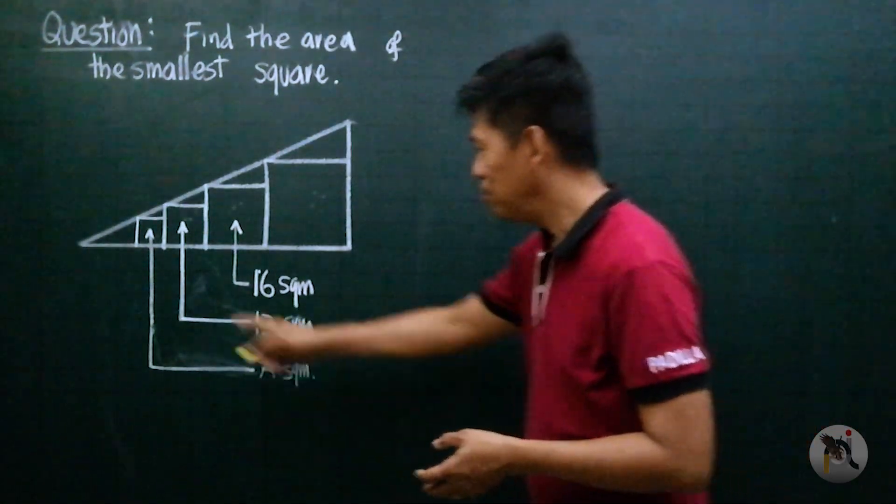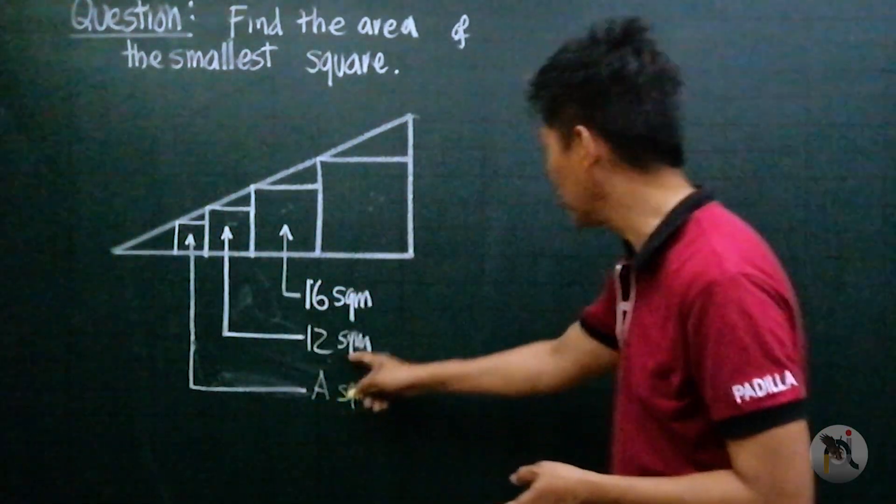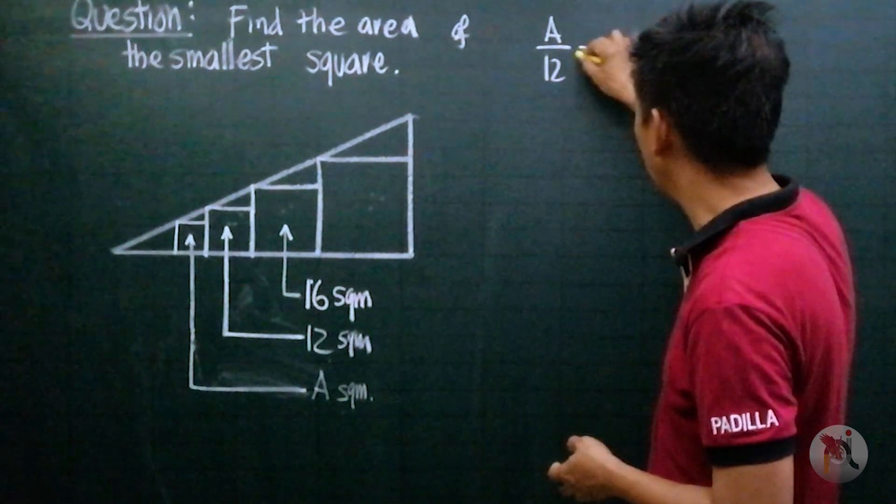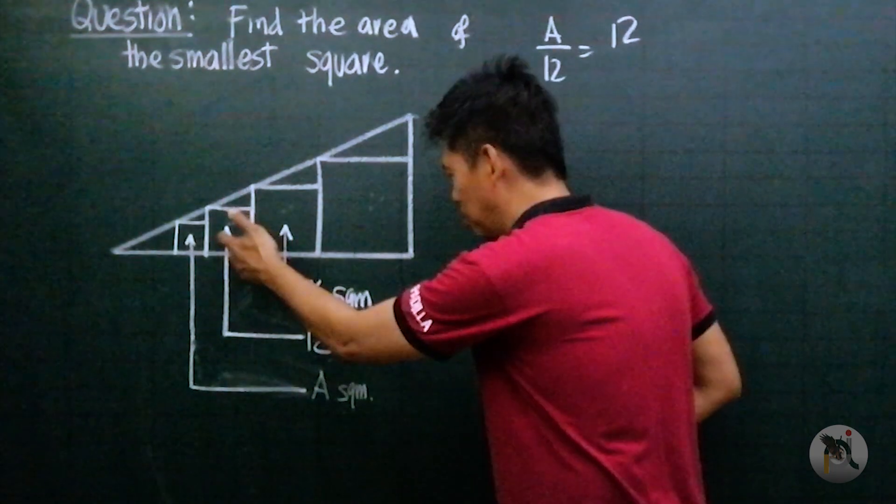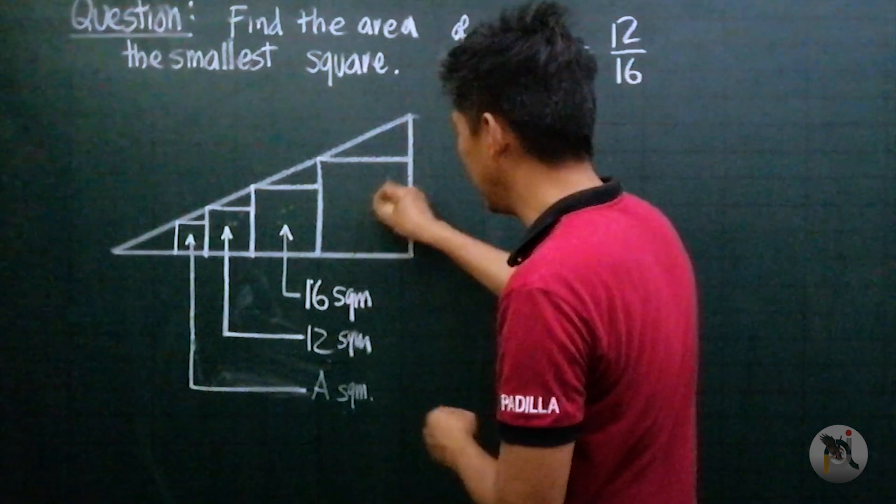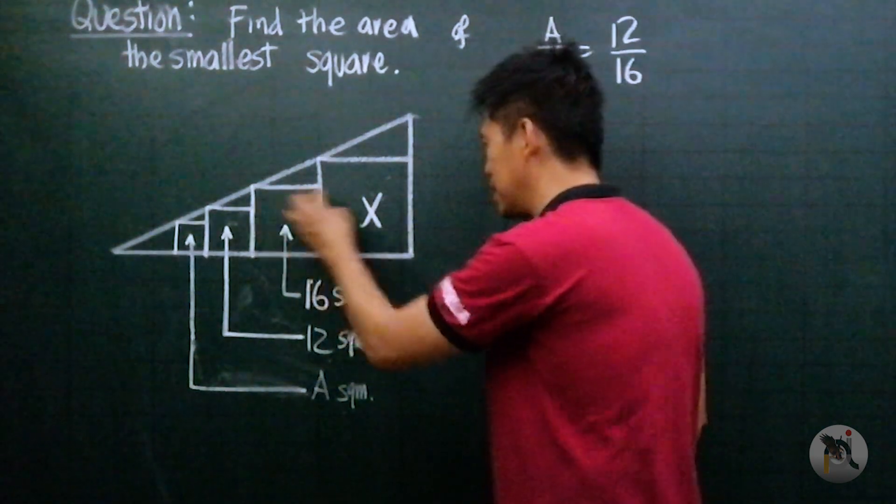A over 12 must be equal to 12 over 16. If the area of this is X, then that is also 16 over X.